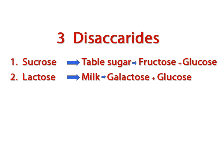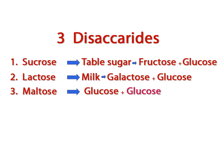The third disaccharide is called maltose and it is made from two glucose molecules. Notice that glucose is at least one of the building blocks for all three disaccharides. You will hear a lot about maltose in unit 8 while studying the digestive system, as maltose is produced in the first step of the breakdown of starch. Which brings us to the third and final group of carbohydrates called the polysaccharides.